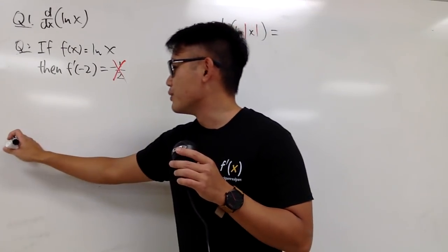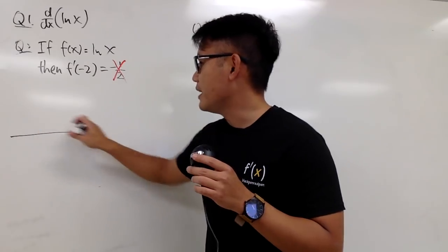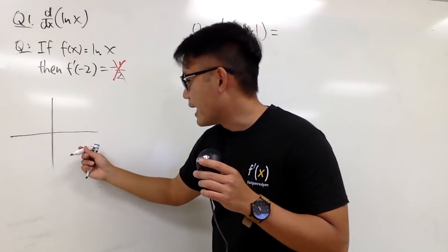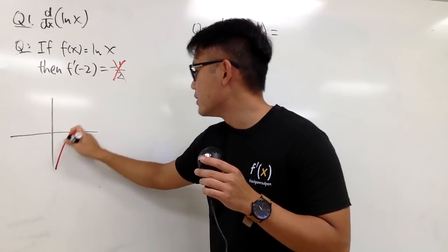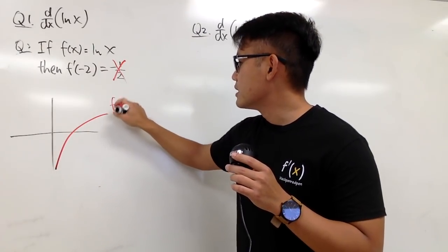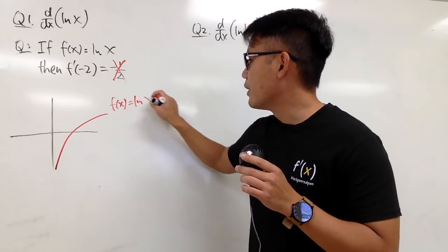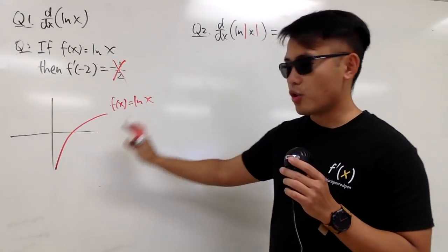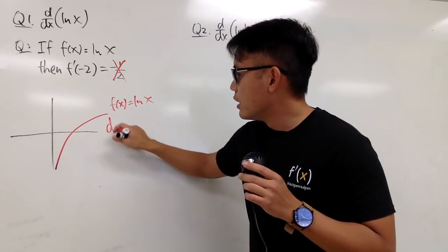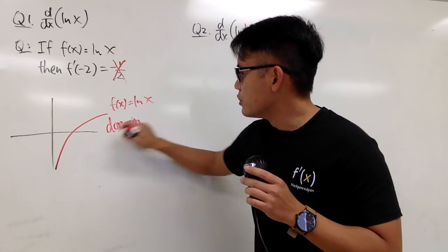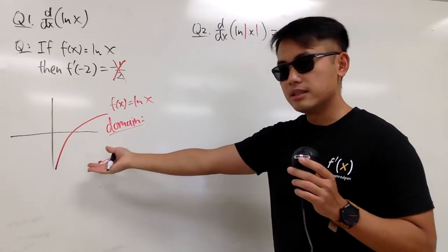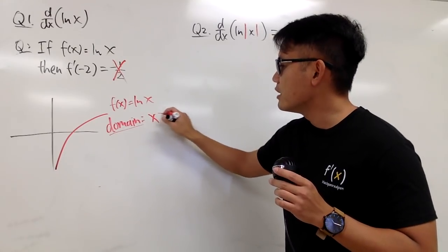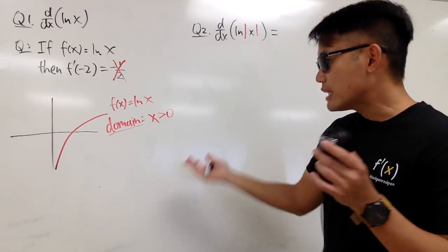Let me show you the graph to illustrate. The graph for ln x looks like just this one portion. This is f of x equals ln x. Let's talk about the domain of the function — we should always pay attention to the domain. In this case, x can only be greater than 0.